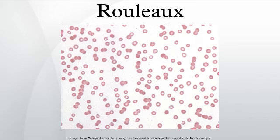Acute phase proteins, particularly fibrinogen, interact with sialic acid on the surface of RBCs to facilitate the formation of Rouleaux. An increase in the ratio of RBCs to plasma volume, as seen in the setting of anemia and hypovolemia, increases Rouleaux formation and accelerates sedimentation. Rouleaux formation is retarded by albumin proteins.